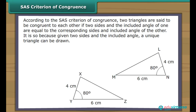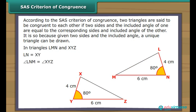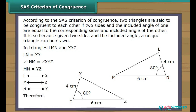According to the SAS criterion of congruence, two triangles are said to be congruent if two sides and the included angle of one are equal to the corresponding sides and included angle of the other. It is so because, given two sides and the included angle, a unique triangle can be drawn. In triangles LMN and XYZ, vertex L corresponds to vertex X, vertex M to vertex Y, and vertex N to vertex Z. Therefore, triangle LMN is congruent to triangle XYZ.